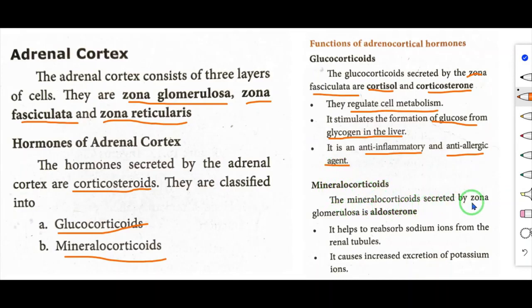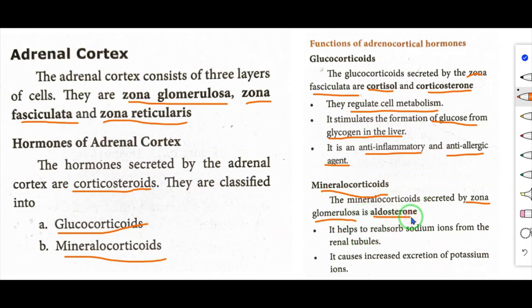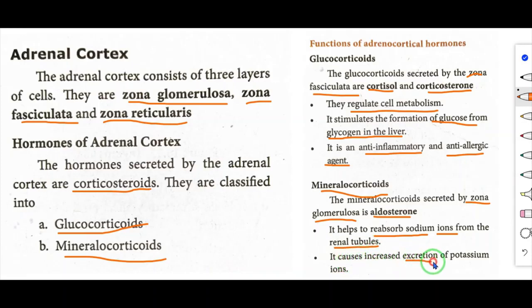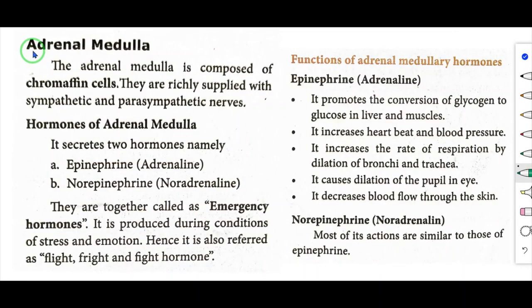The mineralocorticoids are secreted by zona glomerulosa — the outer layer. The mineralocorticoid hormone is aldosterone. It helps to reabsorb sodium ions from the renal tubules and causes increased excretion of potassium ions.